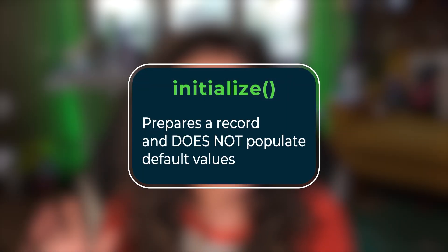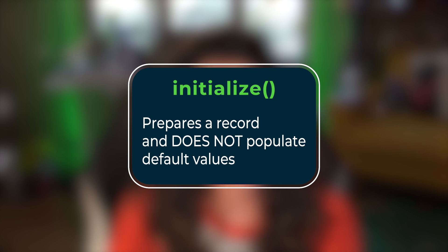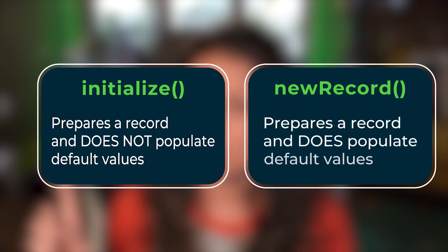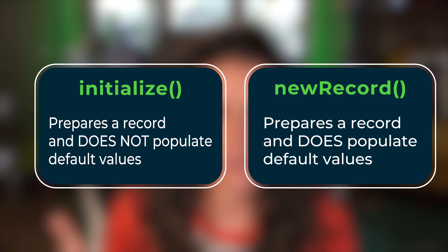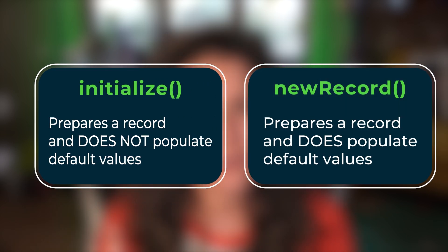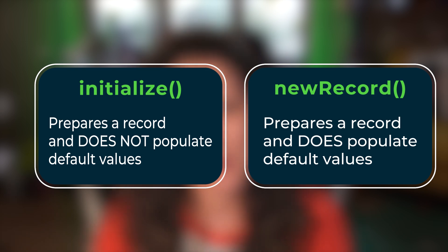Initialize prepares a GlideRecord object for creating a new record without populating those default values, whereas newRecord prepares a GlideRecord object for creating a new record and does populate the default values. Those default values are all based on table settings, dictionary entries, or even system defaults.